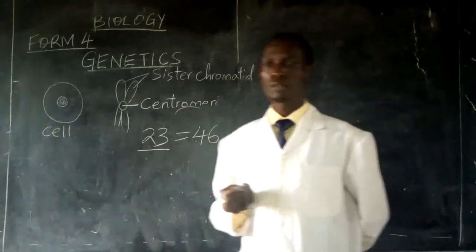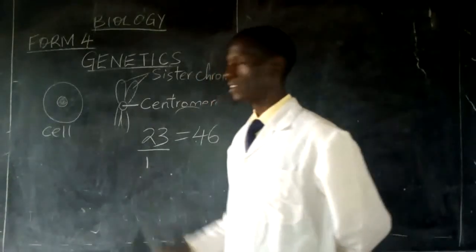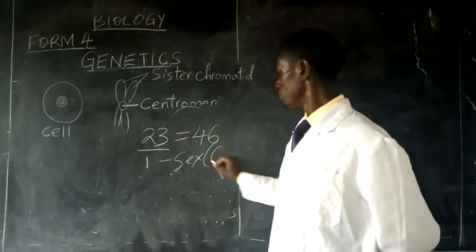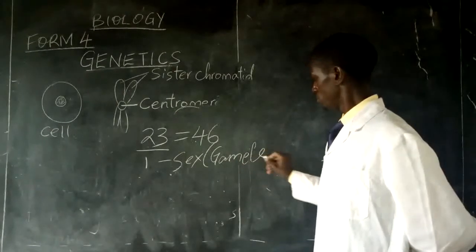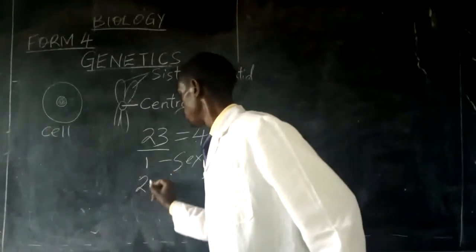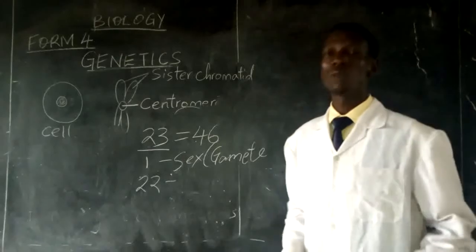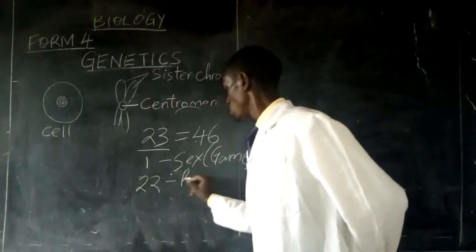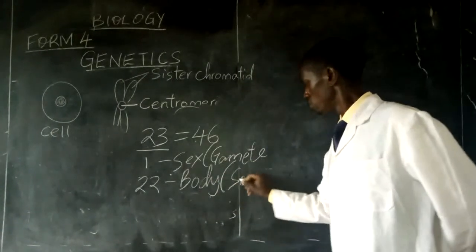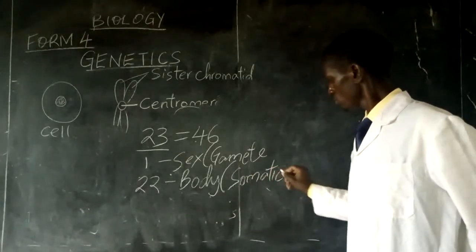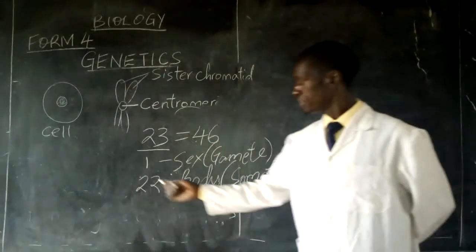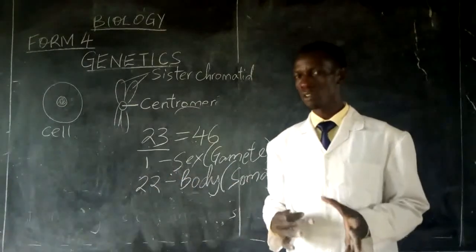Of these 23 pairs of chromosomes, a single pair is the sex chromosome. The remaining 22 pairs are the somatic chromosomes, or body chromosomes. This single pair of sex chromosomes determines the sex of an individual — whether you are male or female.